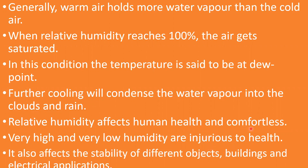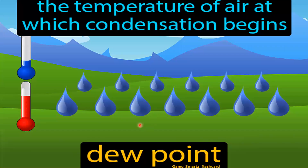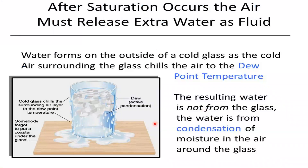Relative humidity affects human health and comfort — very high and very low humidity are both harmful. It also affects buildings and electrical applications. The temperature at which condensation begins is called the dew point. For example, if you fill a glass with water and add ice cubes one by one, at some point you see tiny droplets forming on the outside of the glass. That water comes from the condensation of moisture in the surrounding air as it chills to the dew point temperature.